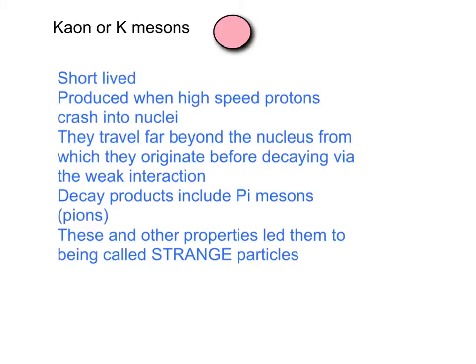And the kaons each travel far beyond the nucleus from which they originate before they decay via the weak interaction. Their decay products include pi-mesons, and these and other properties led them to being called strange particles, and more about strangeness later on.